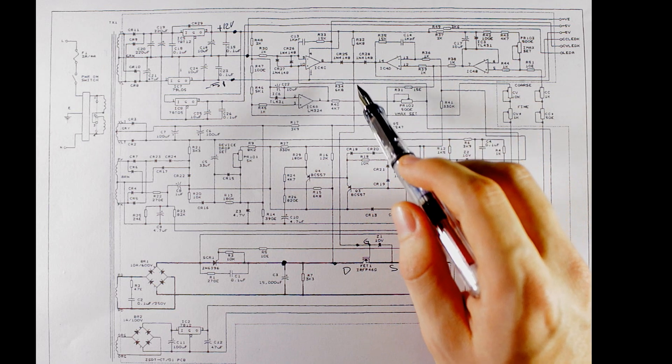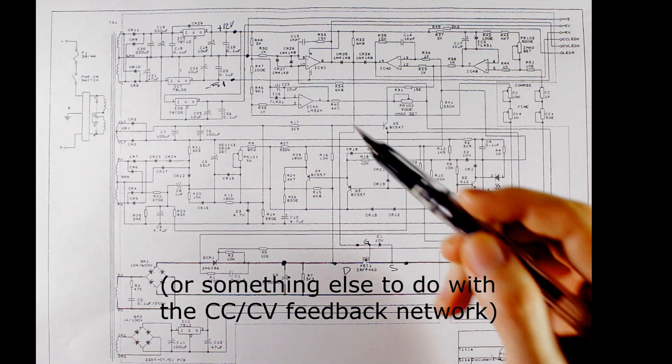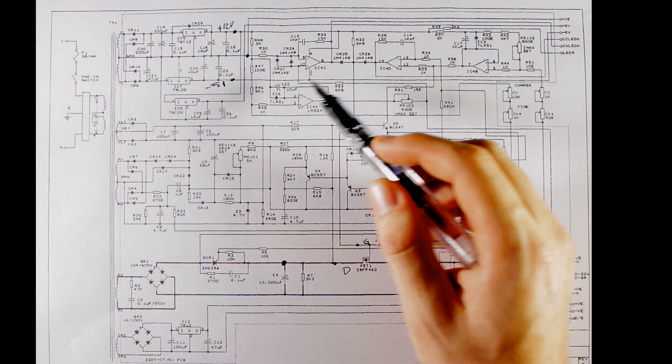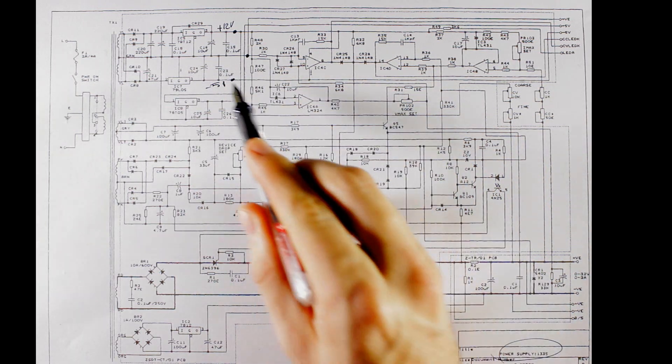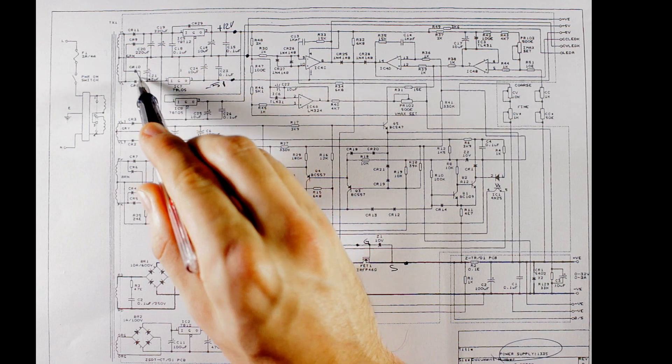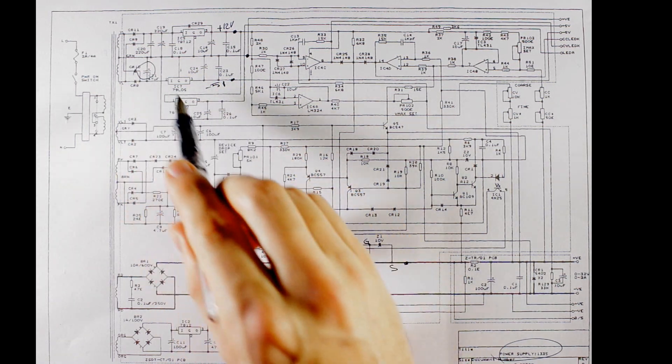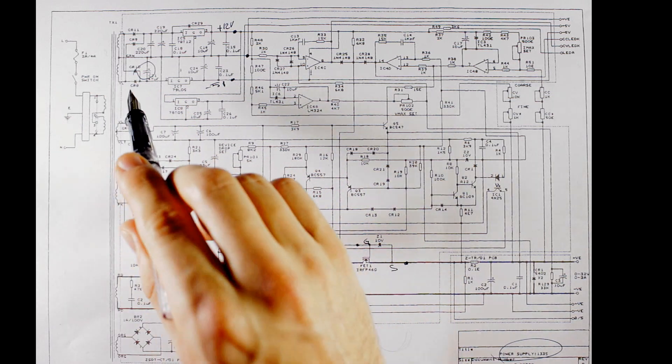This kind of makes sense because if the 5 volt rail collapses before the 12 volt rail then this op amp here will only possibly be able to source positive voltages because it has a positive supply it doesn't have a negative supply and it's not going to be able to drive this thing low which is what it needs to do to be able to actually turn this FET off. So I guess what we could try doing is making this minus 5 volt supply last a bit longer. Now what I'm thinking is we've got this capacitor C21 here which supplies the minus 5 volt regulator so I might try increasing the value of that and we'll see if that makes a difference.